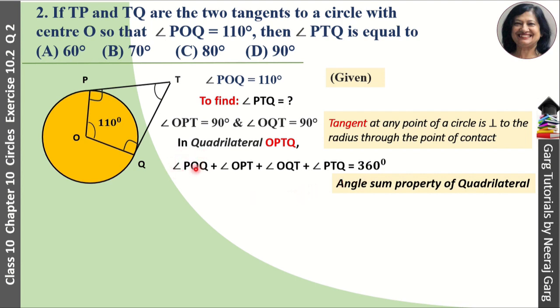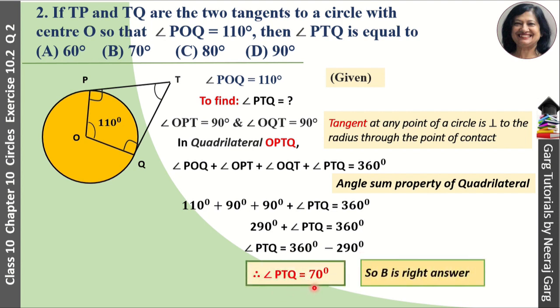Now we know that POQ is 110 degrees, OPT also is 90 degrees, and OQT also is 90 degrees, and PTQ we will find. So angle PTQ is equal to 360 minus 290. So B is the right answer.